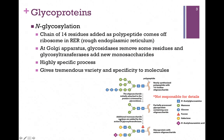First, let's look at N-glycosylation. In this case, a chain of 14 carbohydrate residues is added to the polypeptide as soon as it comes off the ribosome and the rough ER, or endoplasmic reticulum. In other words, we construct a polymer of 14 carbohydrates and then attach it to the polypeptide as soon as it comes off the ribosome. That's illustrated at the top of our figure here.